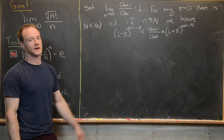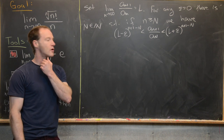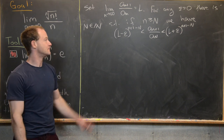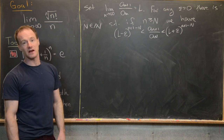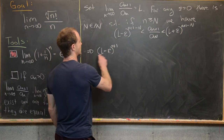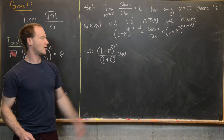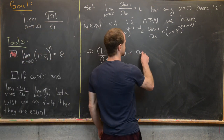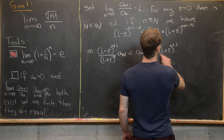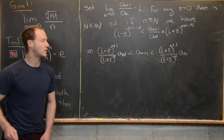Multiplying through by a_N to isolate a_{n+1}, we get: (l minus epsilon)^{n+1} over (l plus epsilon)^N times a_N is less than a_{n+1}, which is less than (l plus epsilon)^{n+1} over (l minus epsilon)^N times a_N. So that should be l plus epsilon on the right side.